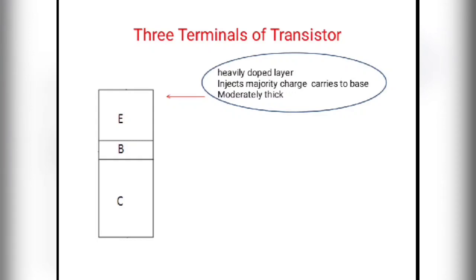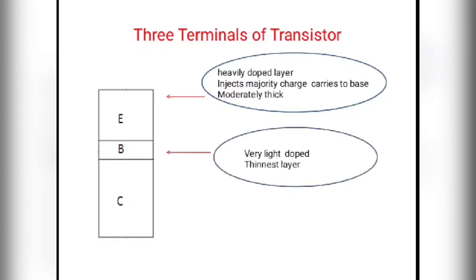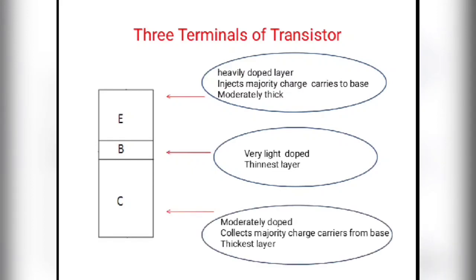The main function of the emitter is to inject the majority charge carriers into the base. The base is the central terminal — it is very lightly doped and is a thin layer. Its function is to provide a path for majority charge carriers emitted by the emitter. The third layer is the collector, denoted by C. It is the thickest layer and is moderately doped. Its main function is to collect majority charge carriers from the base, and it dissipates a large amount of heat.